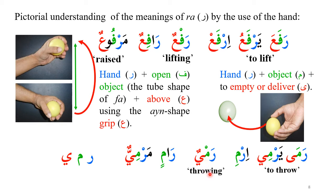'Ram yun' means throwing and 'ramin' means one who throws — the ya goes missing as these are weak letters. 'Marmiyun' means thrown. When there is ya, alif, or waw in a root, these are called weak letters and the conjugation is done in a particular way. Always learn all six forms: three verb forms and three noun forms — the masdar, the fa'il, and the maf'ul. The masdar is 'ram yun' and fa'il is 'ramin.' Learning these six forms will help you learn Arabic very quickly.